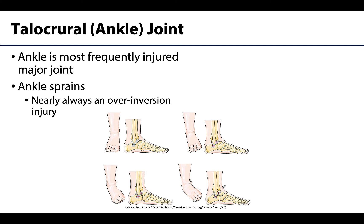The talocrural or ankle joint is one of the most frequently injured major joints of the body. Ankle sprains are the most common injury, and they are nearly always over-inversion injuries — a foot gets planted and forced into over-inversion, tearing some of those lateral ligaments. The tear can be partial or a complete rupture depending on the severity. Think of stepping on an uneven surface and the foot being forcibly inverted. That said, it is not always an over-inversion injury; it can affect the deltoid ligaments as well — these are simply the most common.